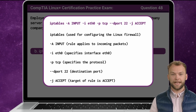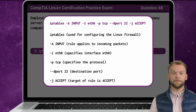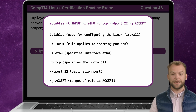Finally, the -j ACCEPT option specifies the action to take if the conditions specified by the rule are met. In this case, ACCEPT indicates that incoming packets matching the rule should be accepted and allowed through the firewall.